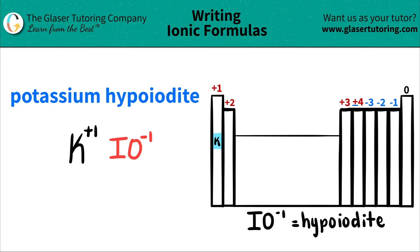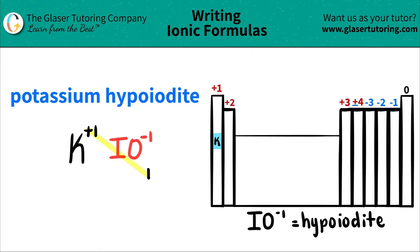Now since we have the two components, all we do is this little cool trick where we crisscross the charges to say how many of each component I need. So this plus one crisscrosses down, telling me that I need one of the hypoiodides. And then this negative one crisscrosses down, telling me that I need one potassium.